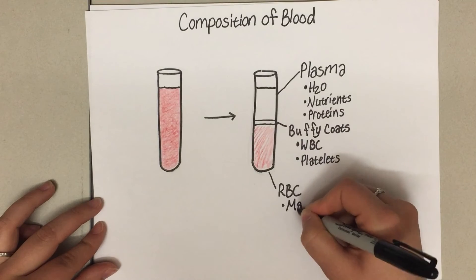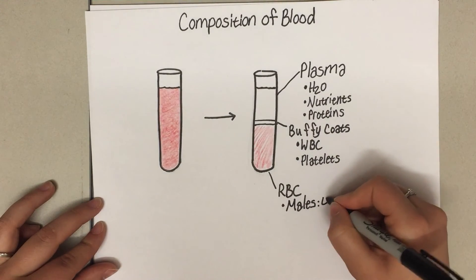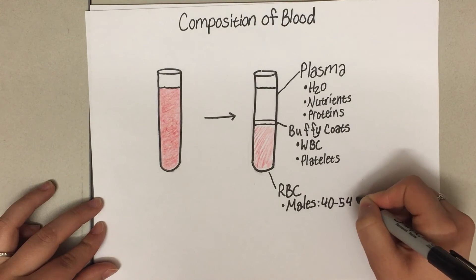In males, a healthy hematocrit, or percent red blood cells, would be 40 to 54% erythrocytes.